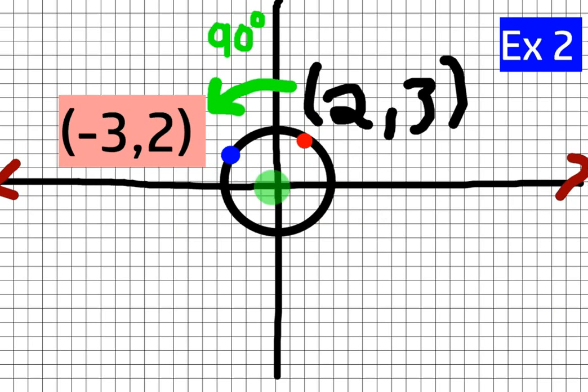again, what we can do is just kind of draw a line from our original point to our new point and see that it does form a 90 degree angle with the origin. You can also draw an arc and see that that arc represents 90 degrees or 90 out of 360, which is one-fourth of the circle.